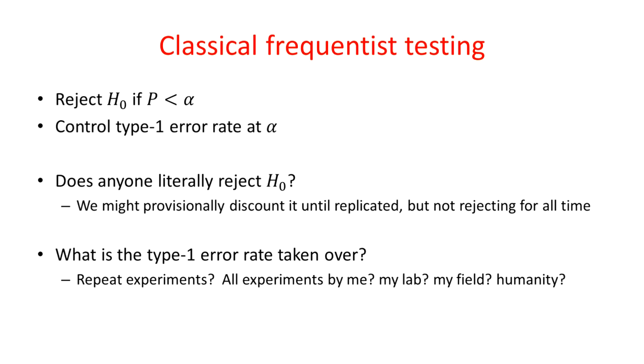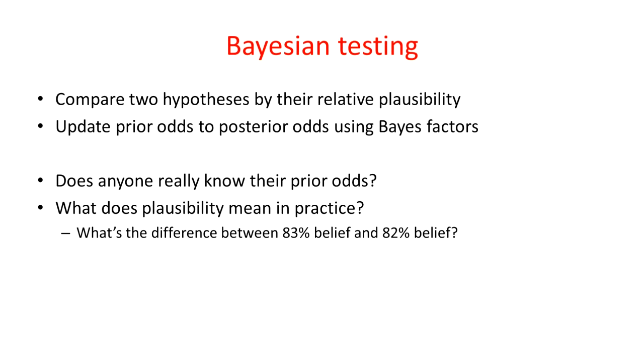Another issue is that if we're controlling an error rate, what is the rate taken over? Is it the type-1 error rate when we repeat the same experiment over and over again? That doesn't often happen. We may view it as the type-1 error rate over all the experiments that we are conducting, or our lab or the field we work in, or perhaps over the entire world. In fact, it's unclear who, if anyone, is interested in the actual rate of type-1 errors, and so it's not clear how we should set the rate.